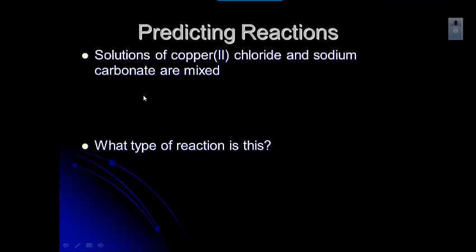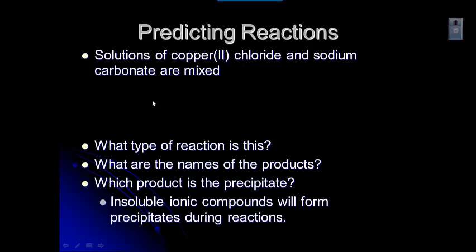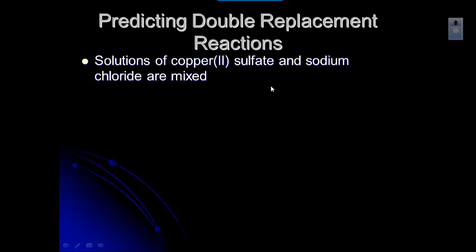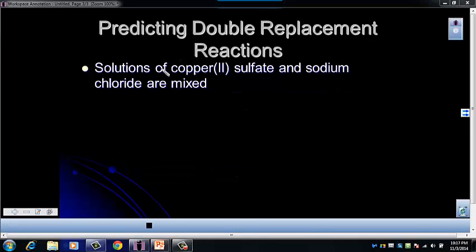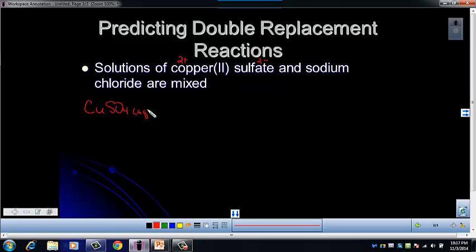So that was a double replacement reaction where we determined the names of the products and identified the precipitate. Let's look at another double replacement: solutions of copper 2 sulfate and sodium chloride are mixed. Think about the charges before writing the reactants. Copper has a 2+ charge and sulfate has a 2 minus, so it's CuSO4, AQ. Sodium is a 1+ and chloride is a 1 minus, so it's NaCl, AQ.